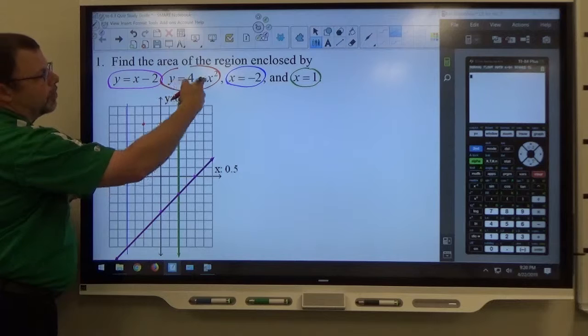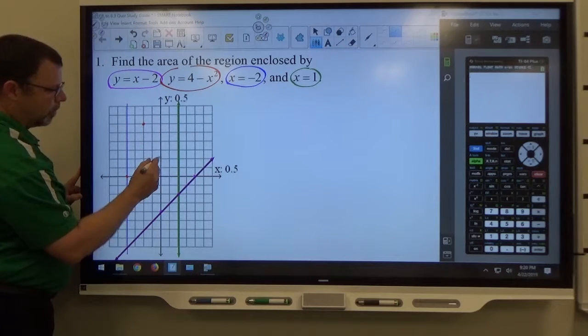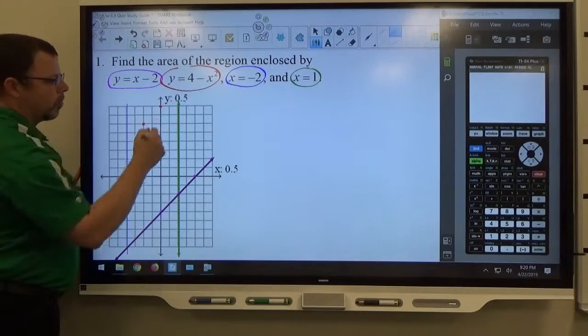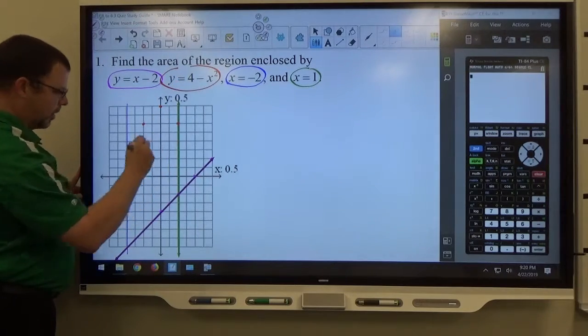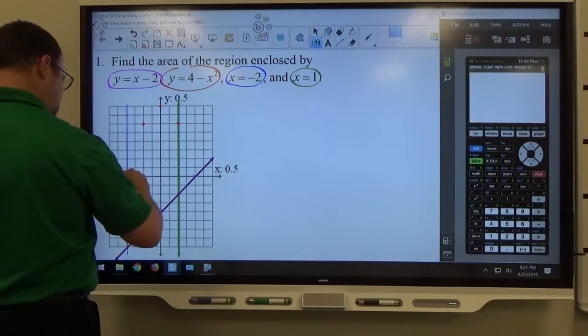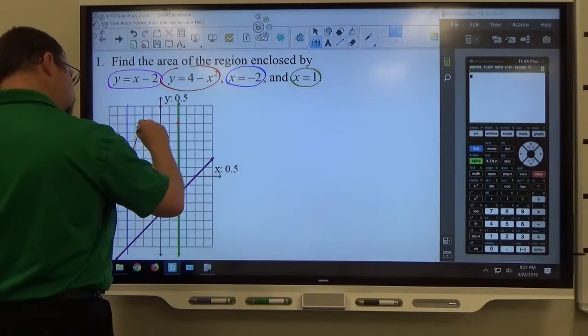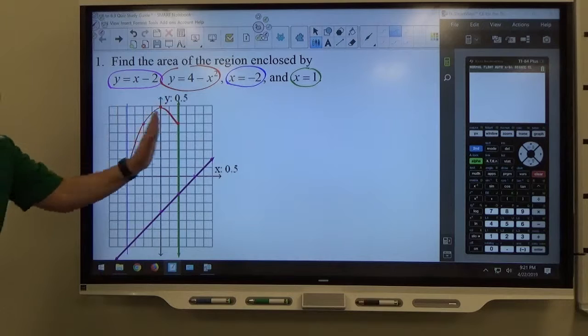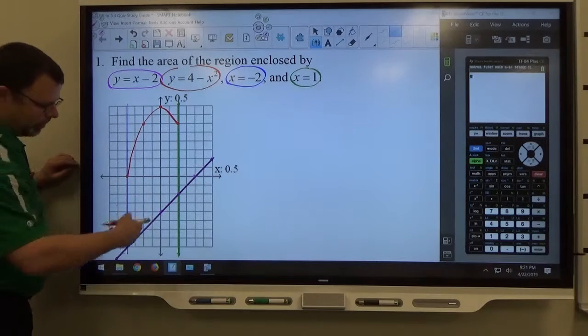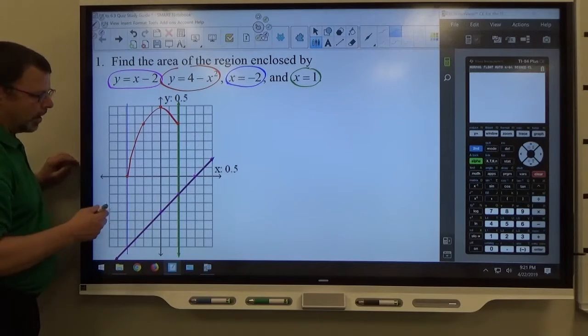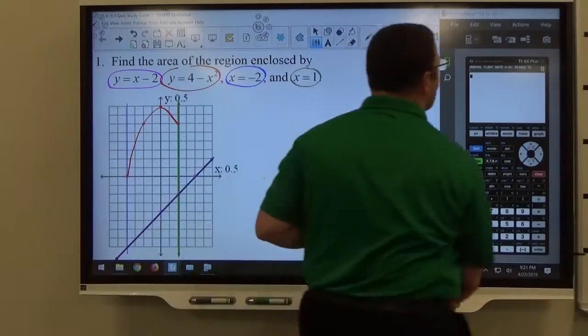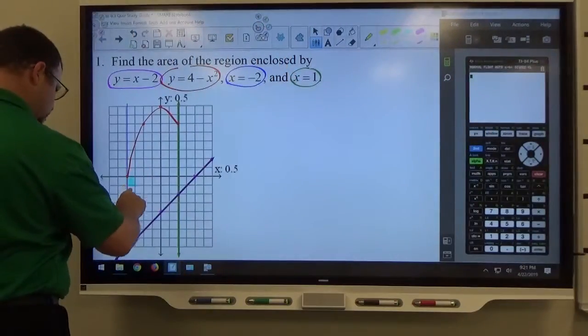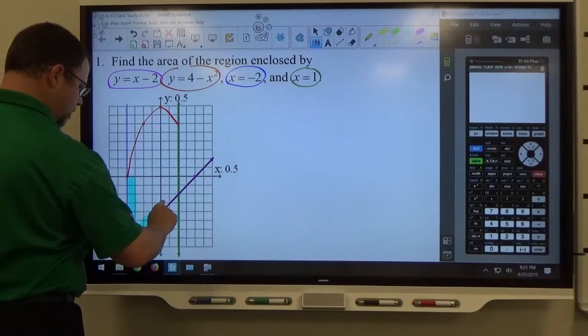If I pick x equals 0, 4 minus 0 is 4, so 0.5, 1, 2, 3, 4. And if x equals 1, 4 minus 1 is 3, that would be right there. And that would complete the region, so this parabola piece. And you can see that it would continue on beyond that, and I really could have prevented the line from going beyond that. So the region that we're concerned with is just right here.